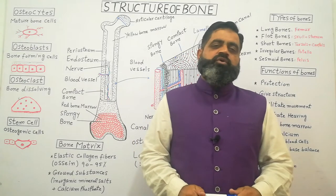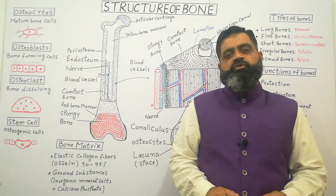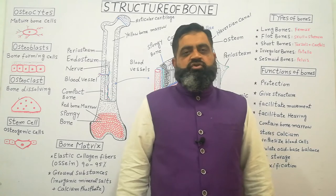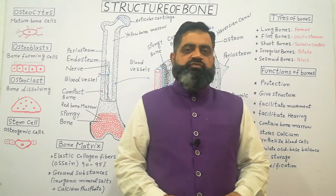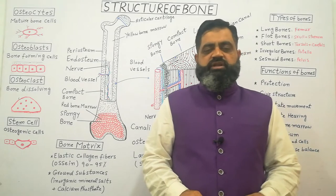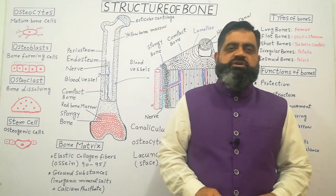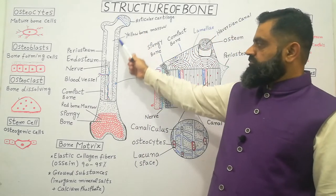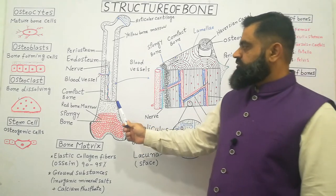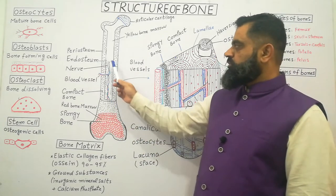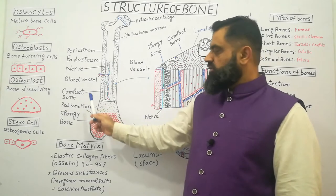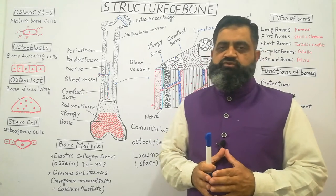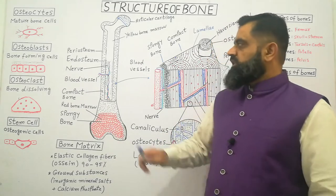Hello to all students. Today we are going to discuss the structure and function of bones. Bone is a dense connective tissue and an important part of our skeleton. In this diagram, I have shown two types of bone: the outer bone is known as compact bone, while the inner bone is known as spongy bone. Compact bone is usually hard connective tissue, while spongy bone is porous.